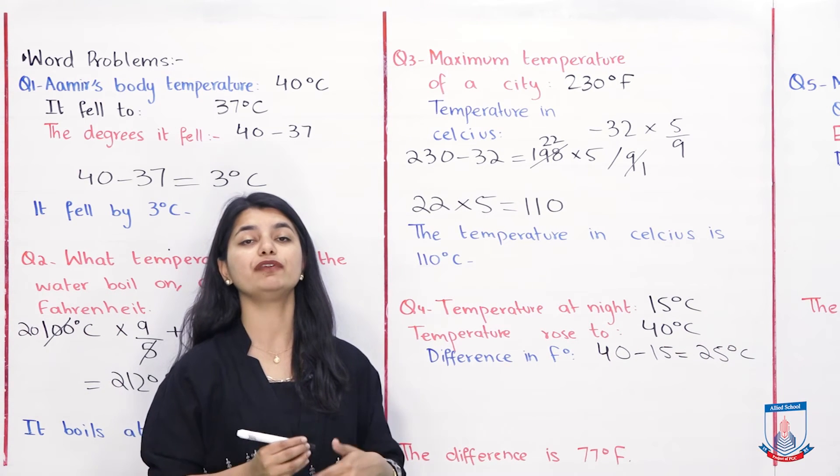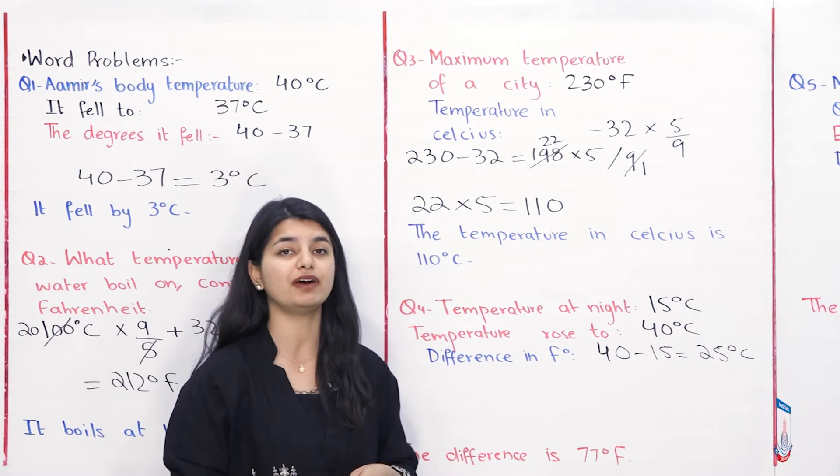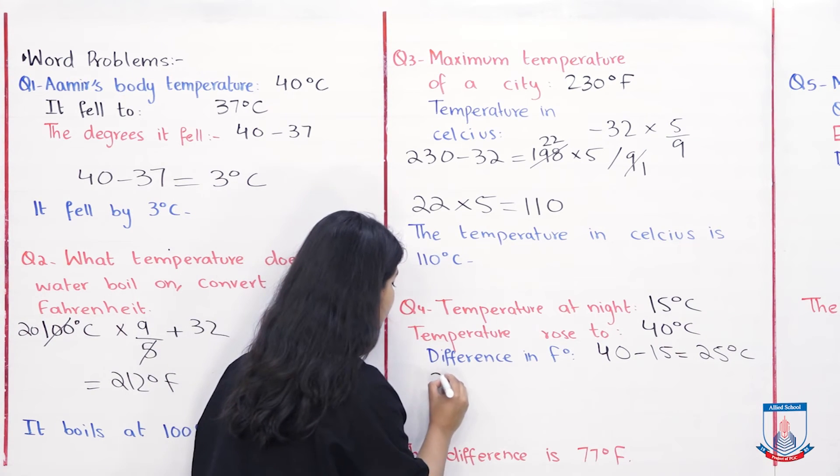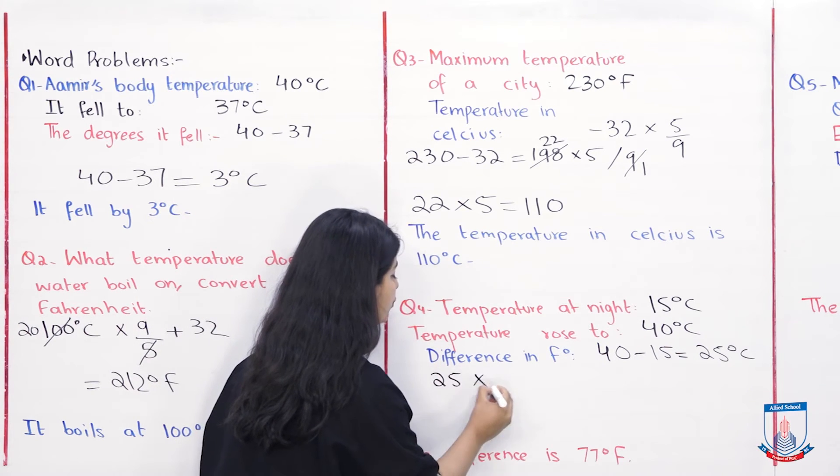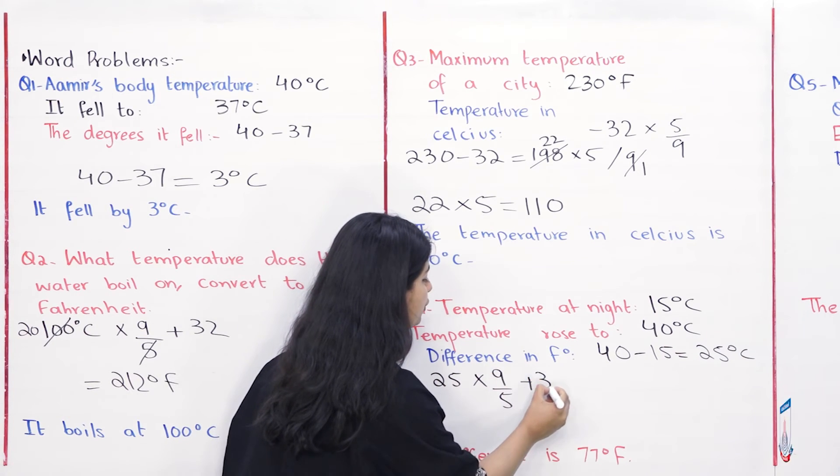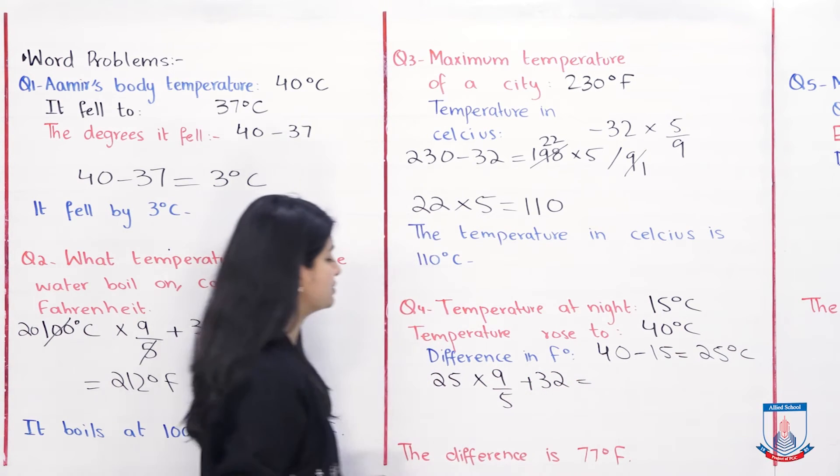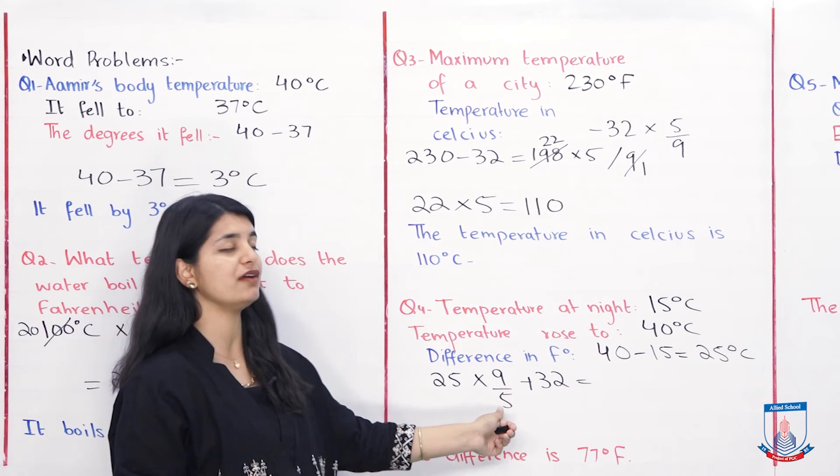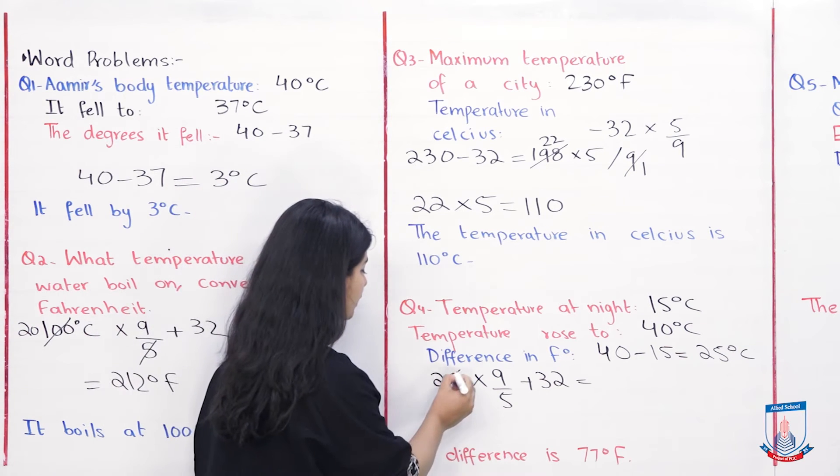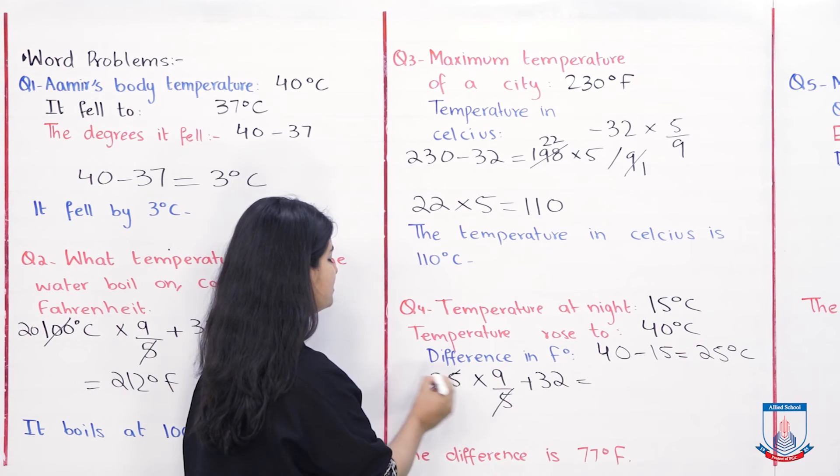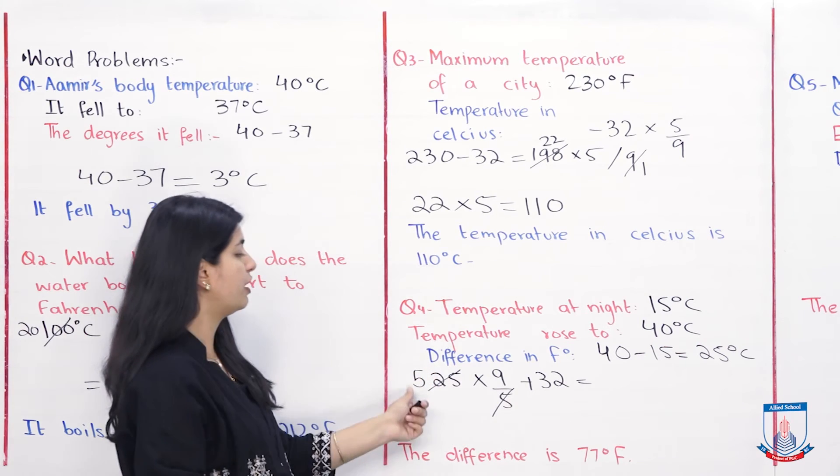You have the figure in Celsius, you have to convert to Fahrenheit. So 25 into 9 by 5 plus 32 is your answer. So what do we do? First, we cancel 25 and 5. When you cancel these, both divided by 5. What is 5 into 9? 45.